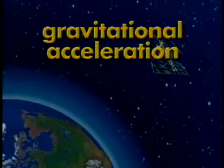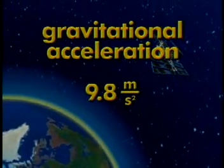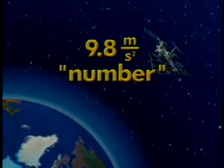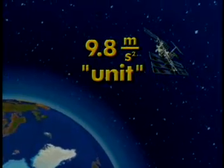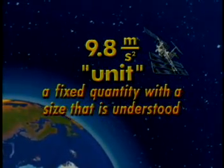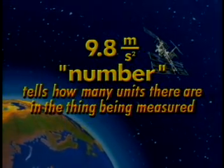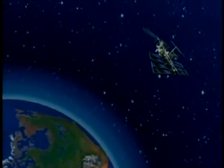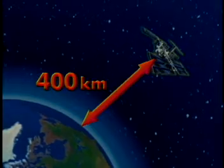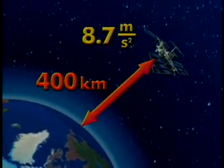But these discoveries won't take place without understanding and applying the math concepts of measurement and graphing. To demonstrate how scientists use these concepts, Dr. Sandra Olson, a microgravity combustion scientist at the NASA Glenn Research Center, will tell us more. Thank you, Jennifer. Now, before we visit Dr. Olson, let's review these concepts. Measurement usually tells us the size of something and consists of a number and a unit. For example, the gravitational acceleration at the surface of the Earth is 9.8 meters per second squared — 9.8 is the number and meters per second squared is the unit.